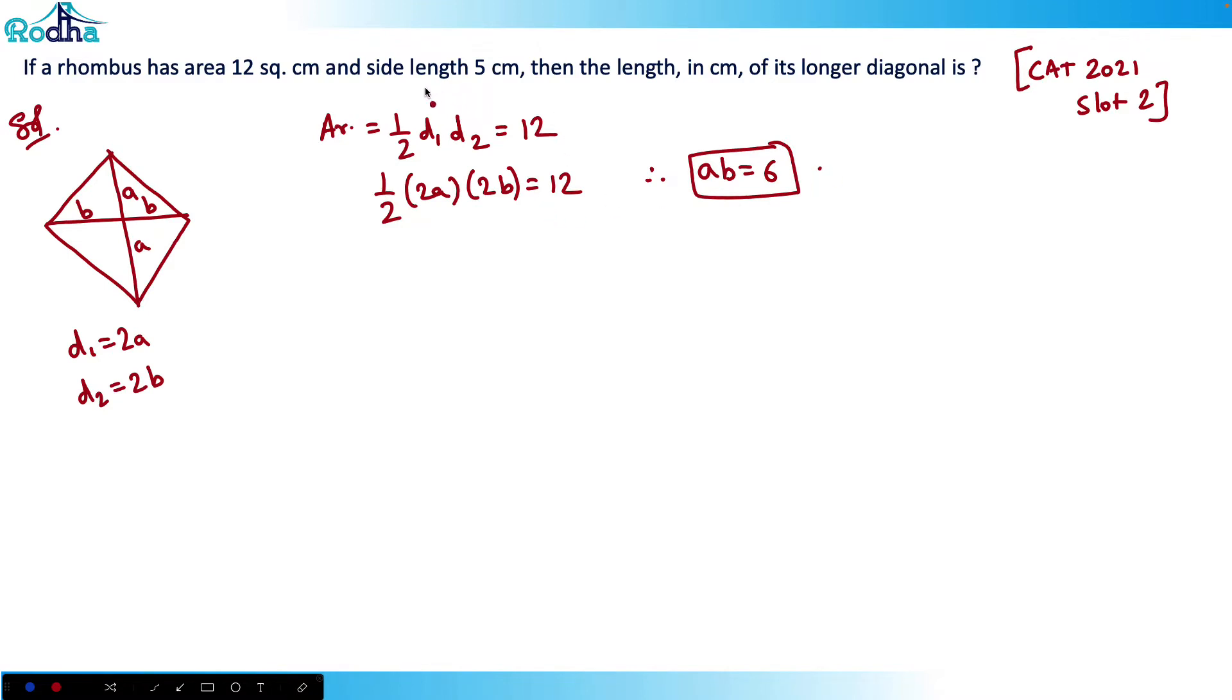It says the side length is 5 centimeters, so each side length is 5 centimeters. When the side length is 5, this is 90 degrees, so obviously I can apply Pythagorean theorem in this triangle.